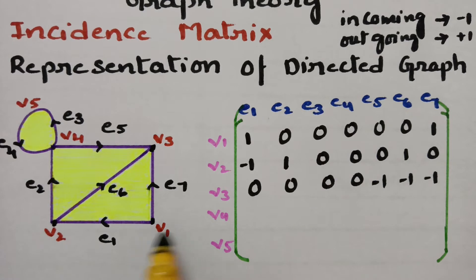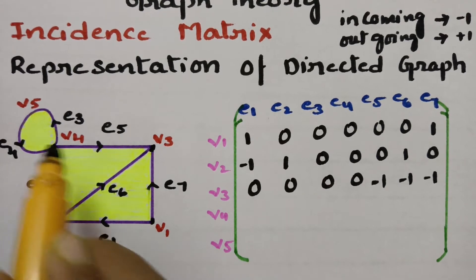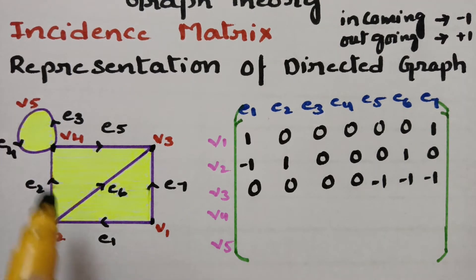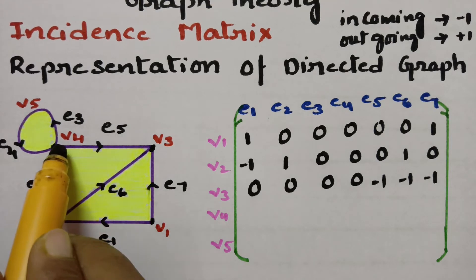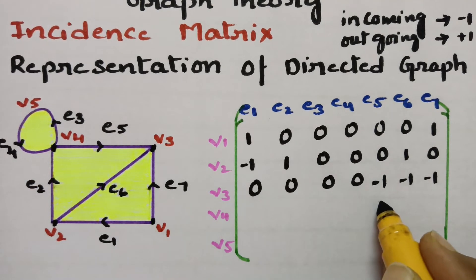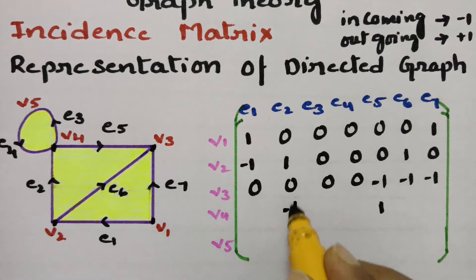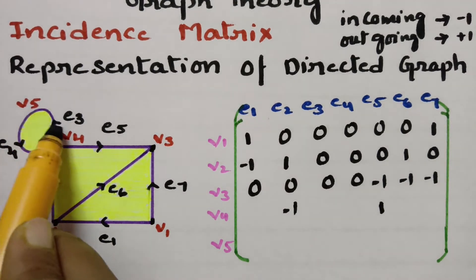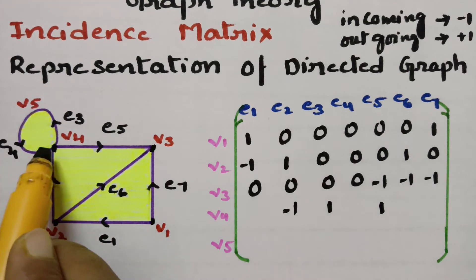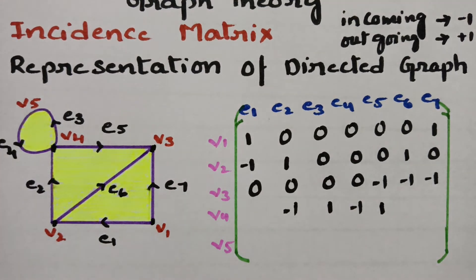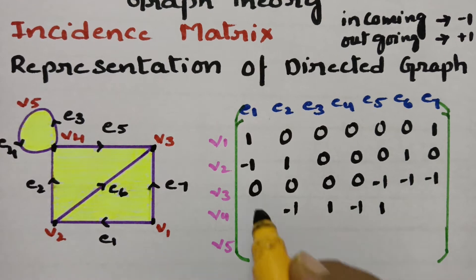Coming to v4, there are four edges incident to it. e5 is outgoing, so plus 1. e2 is incoming towards v4, so minus 1. e3 is outgoing, so plus 1. e4 is incoming, so minus 1. That gives minus 1, plus 1, minus 1, plus 1. Remaining are zeros.